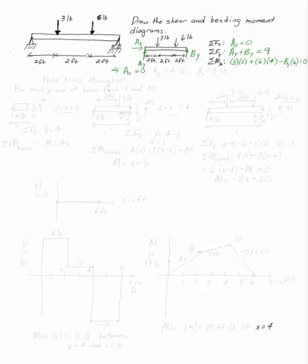Once I've done that, I can solve for AX equals 0, AY equals 4, and BY equals 5 pounds. Note, N is going to be equal to 0 throughout, so I'm going to neglect N in my intermediate diagrams.